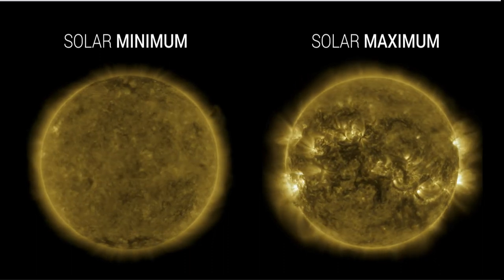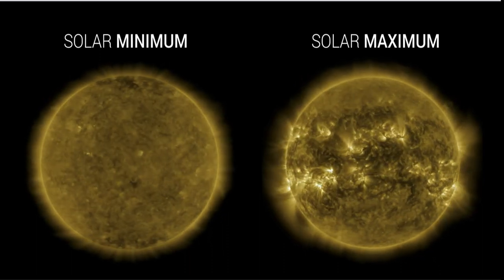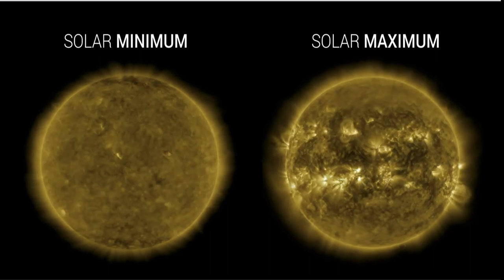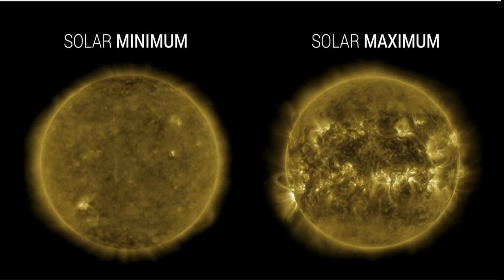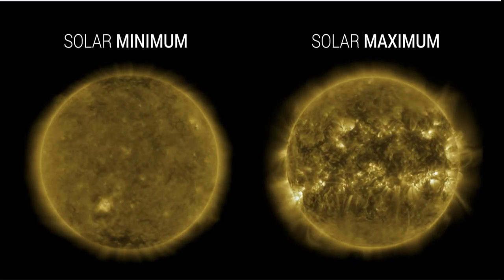What do we mean by solar minimum and solar maximum? That is a difference in the activity level of the sun. At solar minimum, the sun is very inactive and calm.